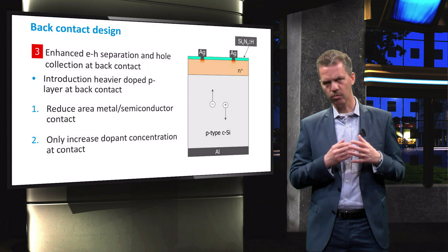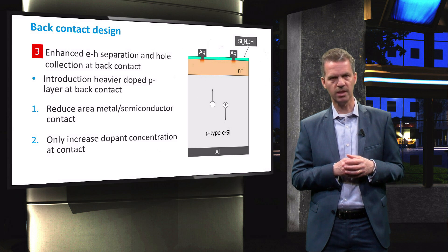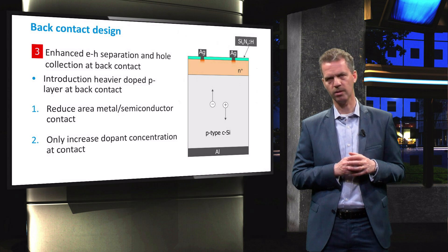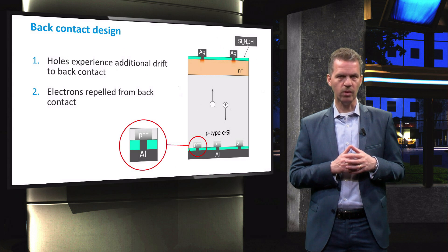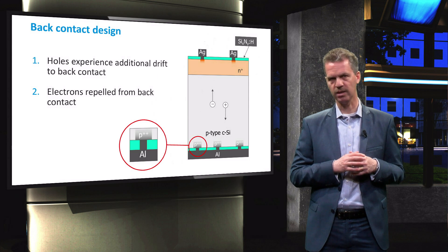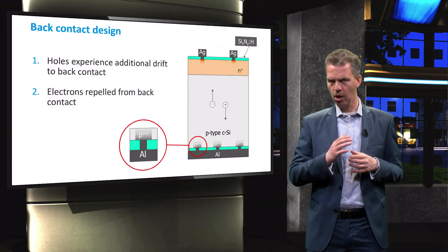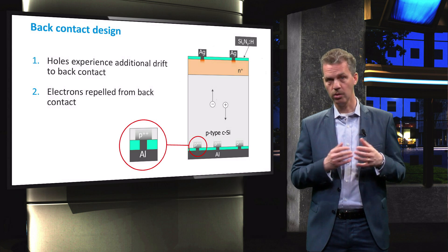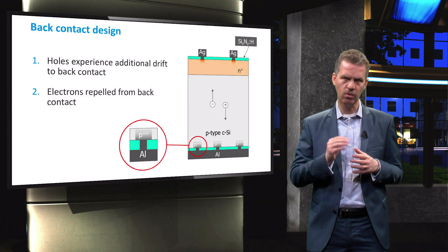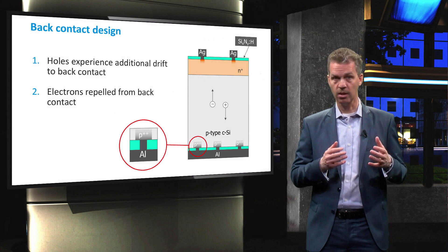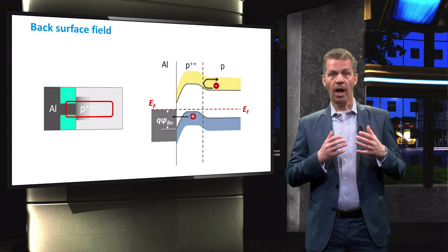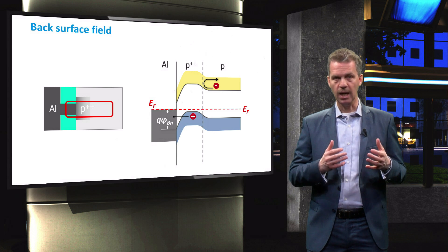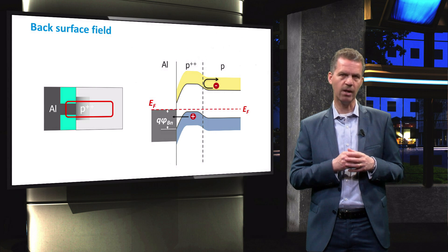The recombination at the back contact can be reduced further by following a similar approach as for the selective emitter: decreasing the contact area and introducing a heavily doped region close to the metal-semiconductor interface. As a result, the back surface field increases the drift of holes towards the back contact while electrons are effectively repelled. The heavily doped region close to the metal-semiconductor interface is created by heating the aluminium contact through the passivation layer. During this firing process, aluminium atoms will diffuse into the wafer and will act as acceptor-type atoms, since aluminium has three valence electrons just like boron. Similar to the selective emitter, the effect on the energy band diagram of a metal-semiconductor interface is clear: electrons will be repelled from the back contact, while holes can tunnel through the barrier and be collected.